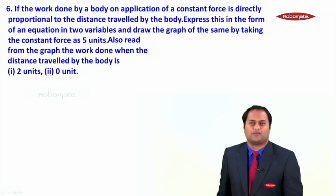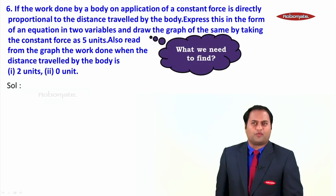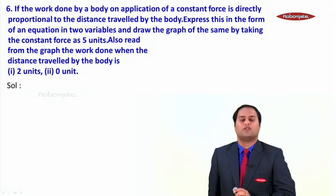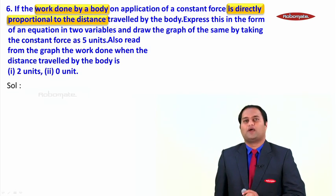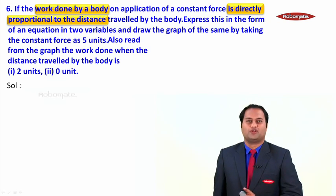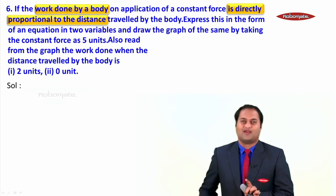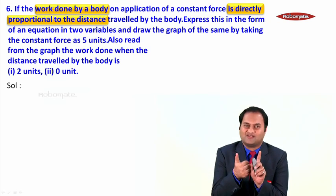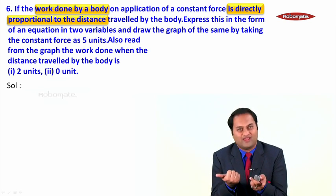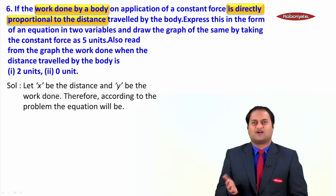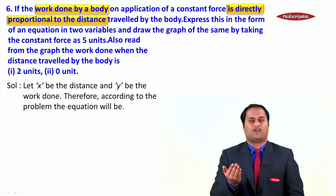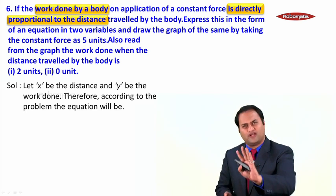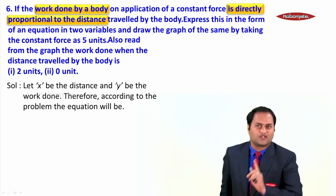Very interesting sum. Let us go step by step. What is given? What are we supposed to find? An equation with two variables — for that, some condition is given. The condition given is: the work done by a body is directly proportional to the distance. Work done and distance are the two quantities. Assume one as x and one as y to form the equation. So let x be the distance and let y be the work done.